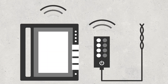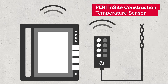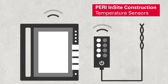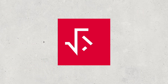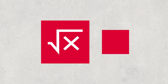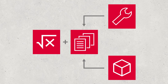The concrete strength can be determined in real time, thanks to the PERI INSIGHT construction temperature sensors. The prerequisites for this are the calculation formula and information on concrete maturity, sourced directly from the concrete manufacturer or determined by testing concrete samples.